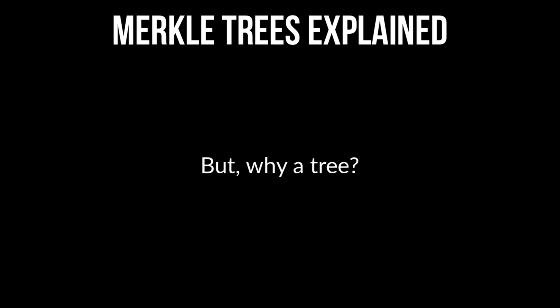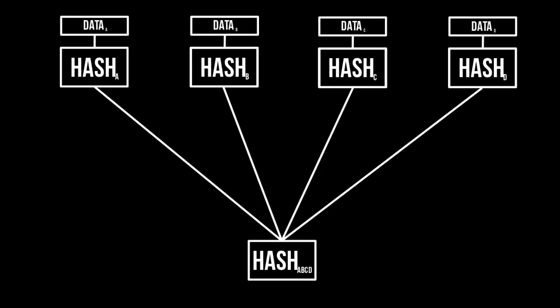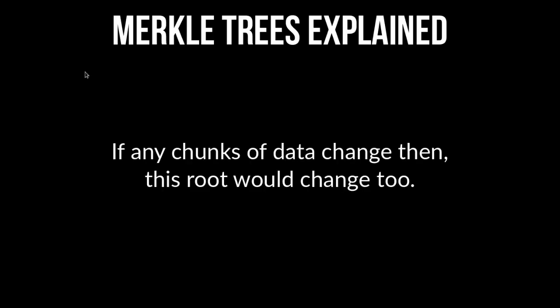But why use a tree? Let's look at the alternative. We could take the hashes from A, B, C, and D and simply concatenate them all together and hash them all at once, and you'd get the same effect — if even a single bit of data in any of those chunks changed, then the root would change too.